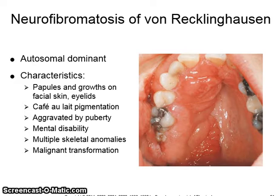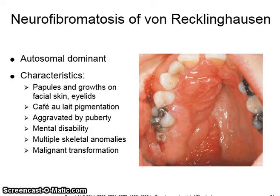Neurofibromatosis, or von Recklinghausen's disease, is characterized by papules and growths on facial skin and eyelids, and café au lait pigmentation on the skin. It is aggravated by puberty, accompanied by mental disability, multiple skeletal abnormalities, and has potential for malignant transformation.